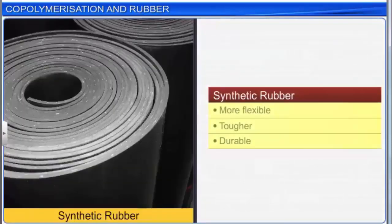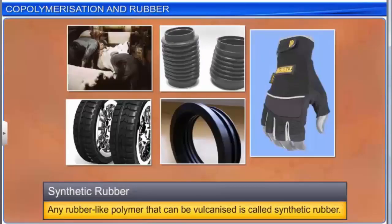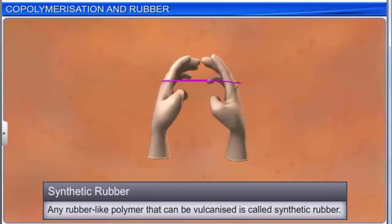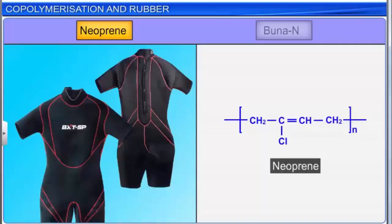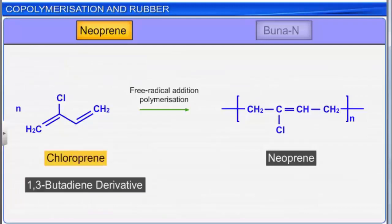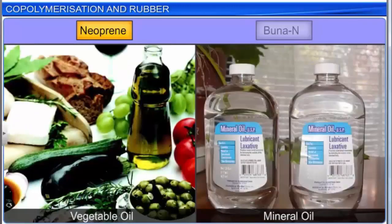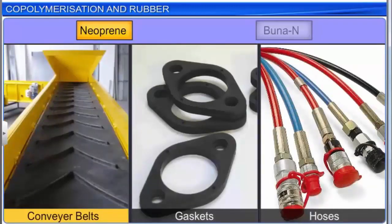Synthetic rubbers are more flexible, tougher, and durable than natural rubber. Synthetic rubber can be defined as any rubber-like polymer that can be vulcanized and must be elastomeric—it can be stretched and must return to its original shape. Neoprene is an example of a synthetic rubber, a homopolymer made from chloroprene, a 1,3-butadiene derivative. Chloroprene undergoes free radical addition polymerization to form neoprene. Neoprene is resistant to vegetable and mineral oils and is used to manufacture conveyor belts, gaskets, and hoses, with a wide variety of household and recreational uses.